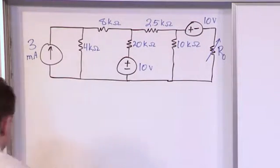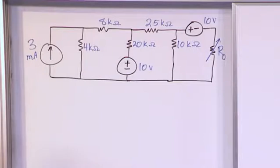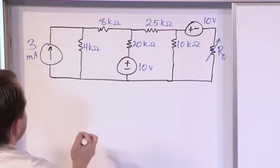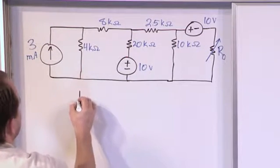So what we're going to do first is redraw the circuit directly underneath with these modifications in place. So this guy's a current source. He's going to be open circuited and disappear.